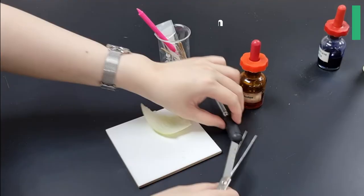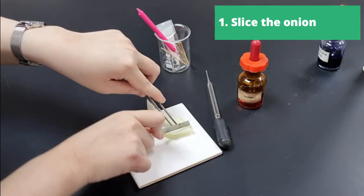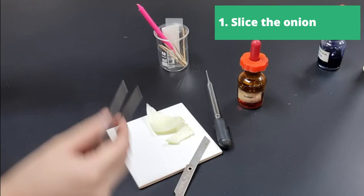Hello everyone, and today we'll be taking a look at some onion cells under the microscope. First we're going to take a little blade and we're going to cut a small section of the onion off.